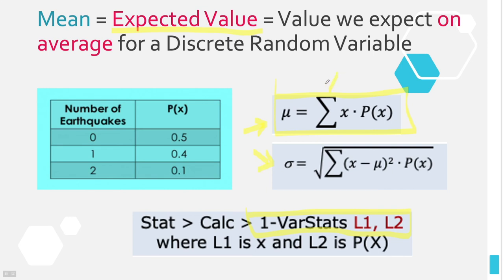Remember in chapter 2 when we talked about mean and standard deviation, and capital sigma means to add all of these things up. To add them up, we've got to do the work first. We have a column for x, a column for p(x), and then we make a third column for x times p(x), and add those up. That sum is our mean.